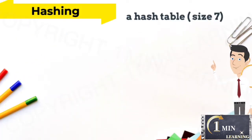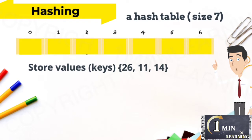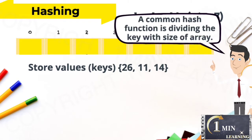For instance, we use an array with size 7 as a hash table where the index ranges from 0 to 6 to store the following values. A common hash function is dividing the key by the size of the array. For example here, we apply a hash function h(k) = k % m.